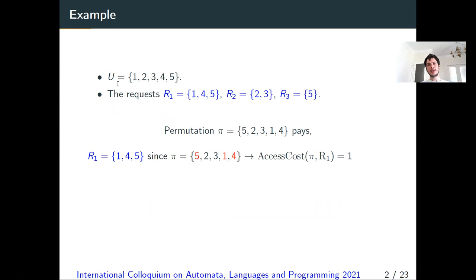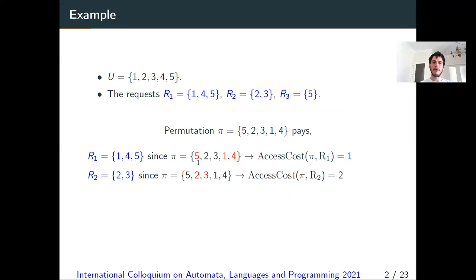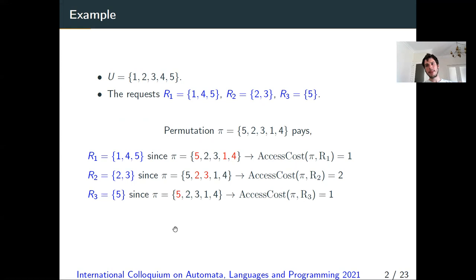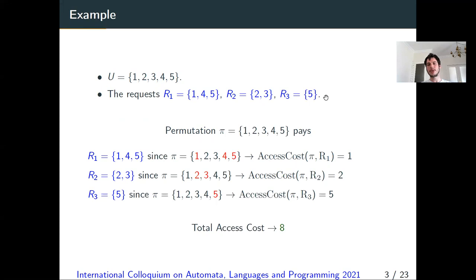Let me give you an example to clarify this. Assume that the universe of elements U is {1, 2, 3, 4, 5}. The first request R1 is composed of elements {1, 4, 5}, the second R2 by {2, 3}, and R3 by just element {5}. If we select the permutation (5, 2, 3, 1, 4), then for request R1 we pay access cost 1, because we find element 5 — which belongs to R1 — in the first position of the permutation. For request R2 we pay 2, because the first element of R2 we find is element 2 in the second position. So we pay access cost 2.